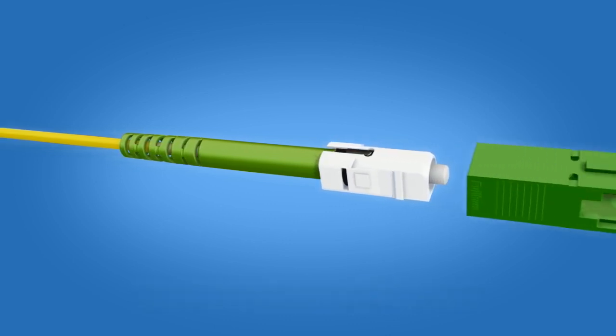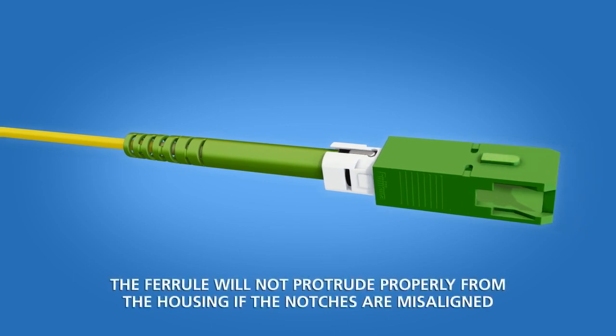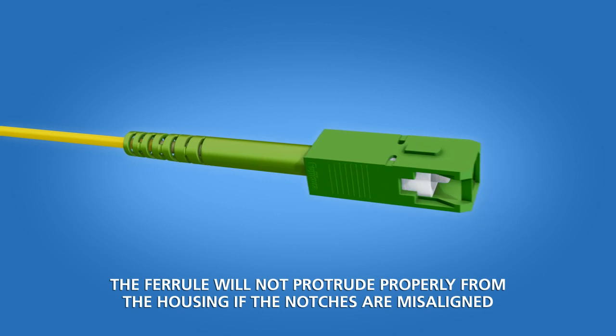Slide the connector housing onto the connector body. The key on the housing and the key on the boot should align. Push until a click is heard.